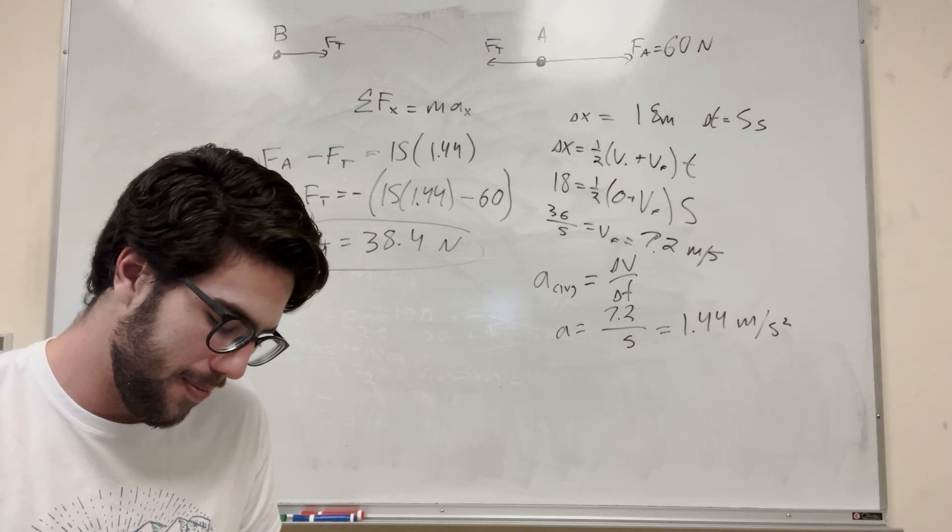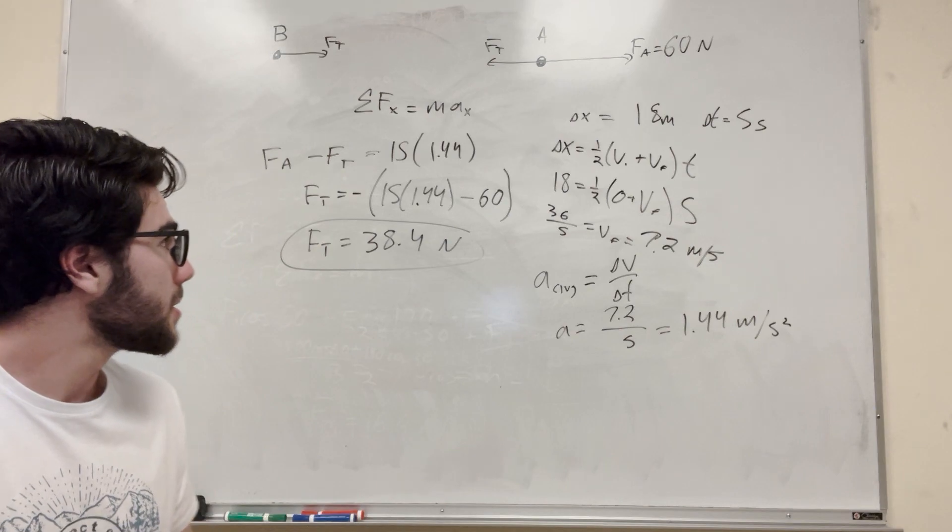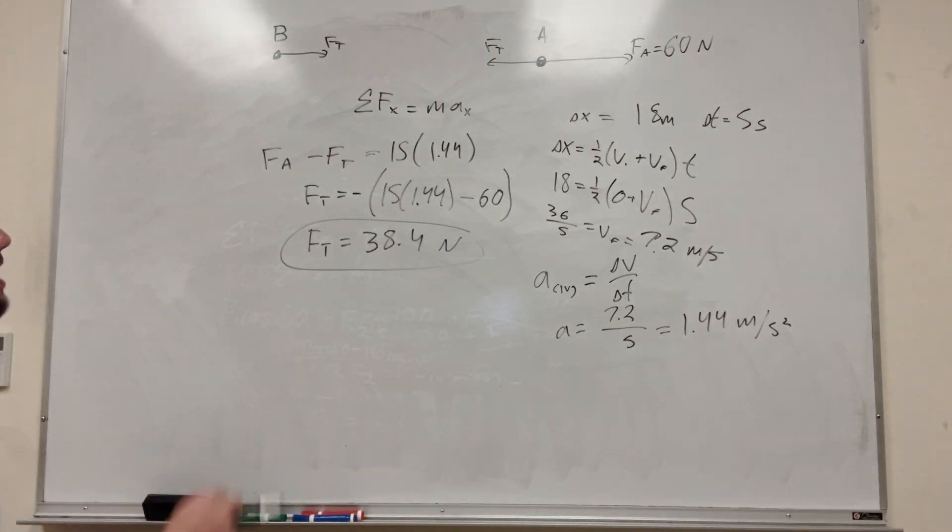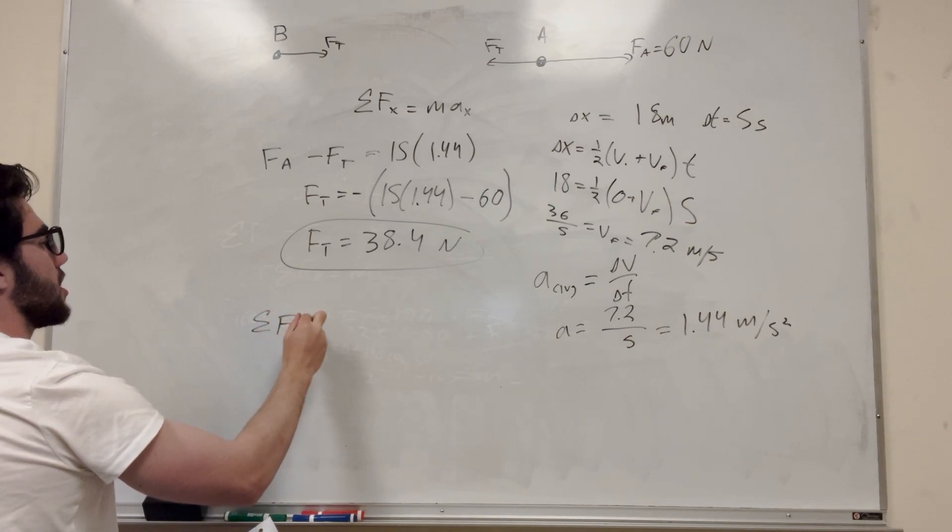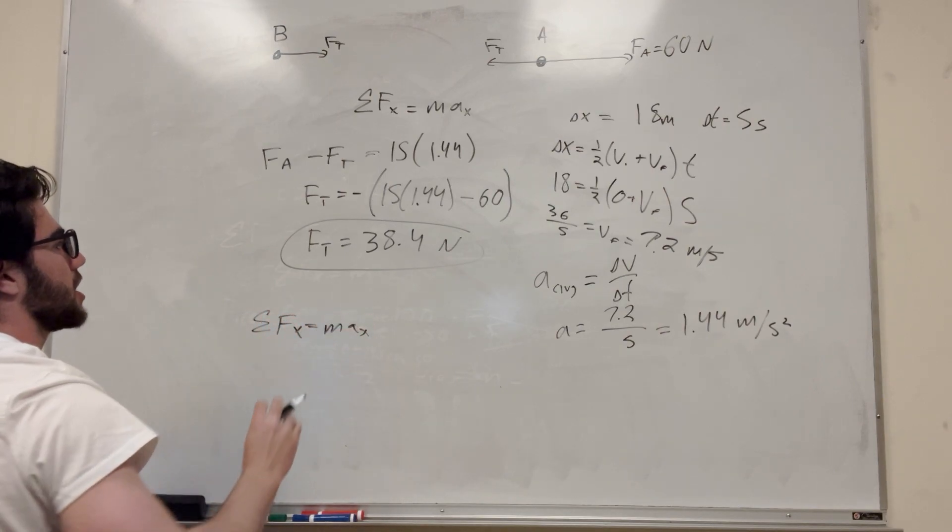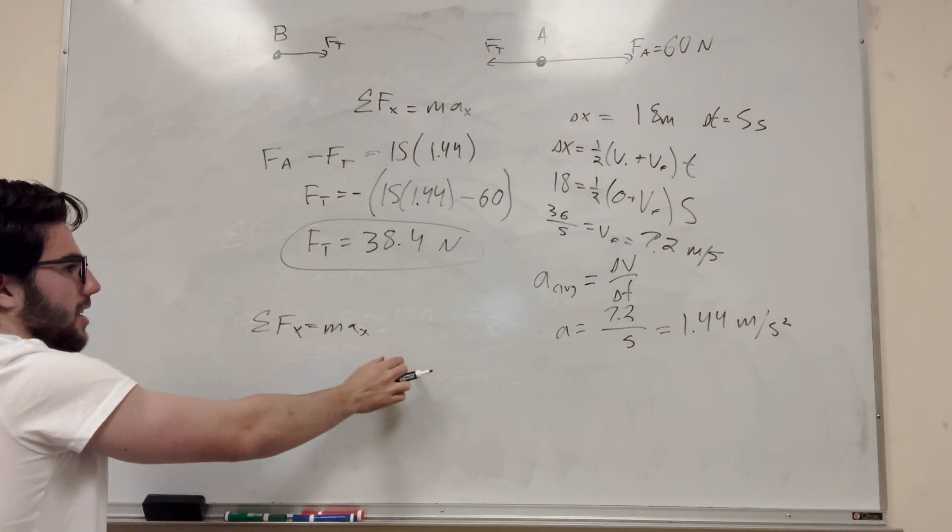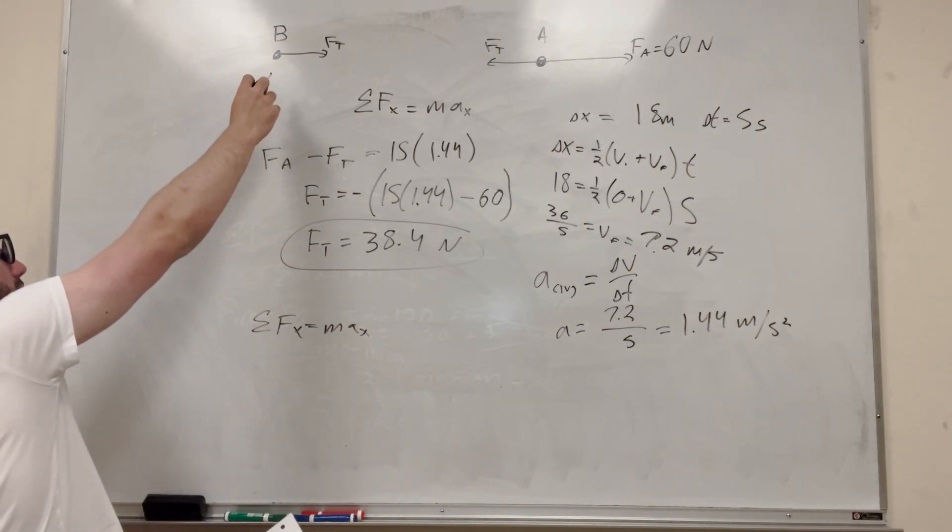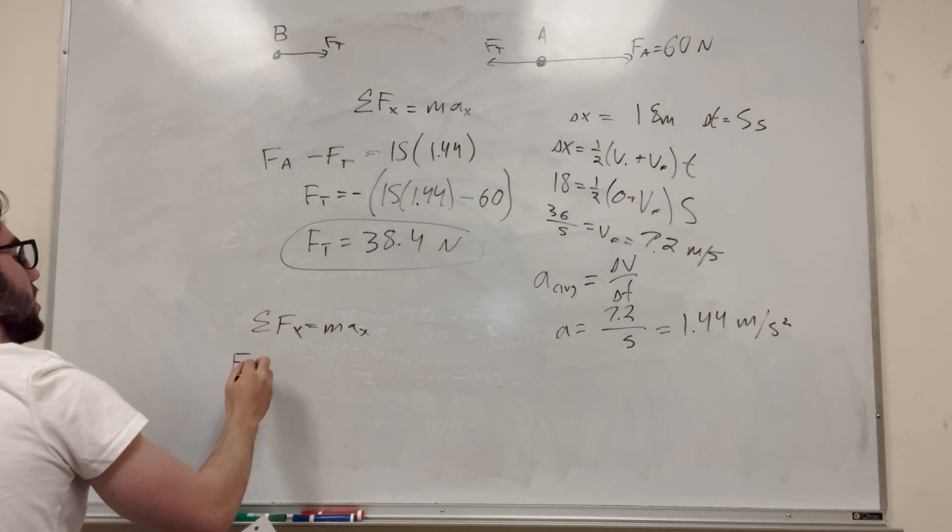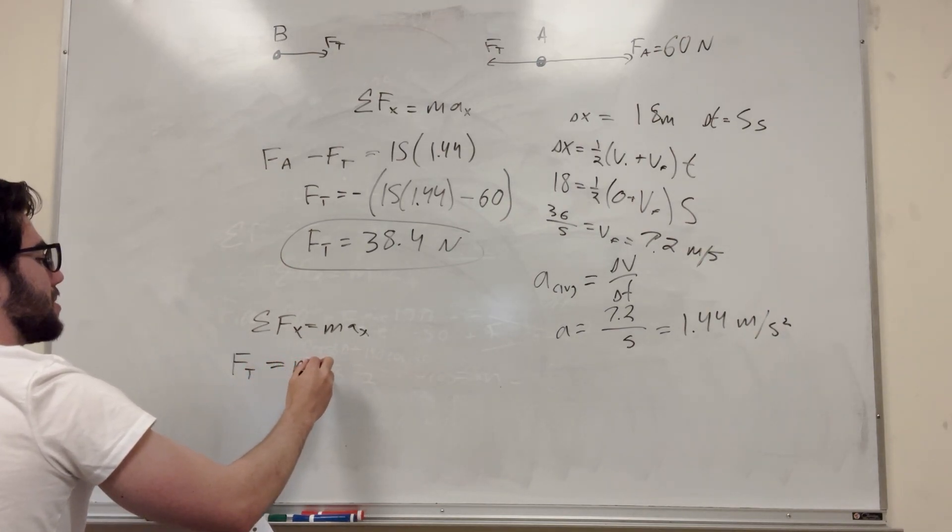Now part B is asking, what's the mass of B? So we're going to use the same formula. But instead of that, we're just going to look at this. So sum of the forces in the x direction are equal to mass times acceleration in the x direction. So we know acceleration in the x direction. And now we have the force of tension. So looking at our thing here, all it is is force of tension. That's the only force acting on it. It's equal to the mass of B times the acceleration.